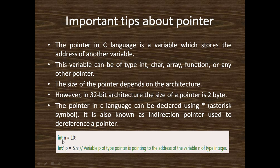Suppose here is an integer variable n whose value is 10, and we write: int *p = &n. Here, the address of variable n is stored in the integer pointer p. The star symbol indicates that it is a pointer variable. So, p of type pointer is pointing to the address of the variable n of type integer.